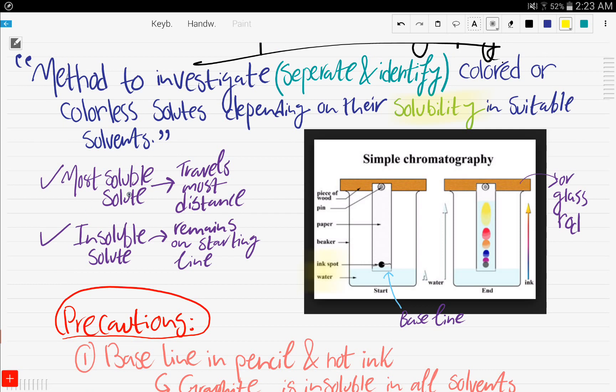Now, a few things. The most soluble solute, of course, is expected to travel the most distance, because it's the most soluble. And an insoluble solute, a completely insoluble one, will remain on the starting line or the baseline.